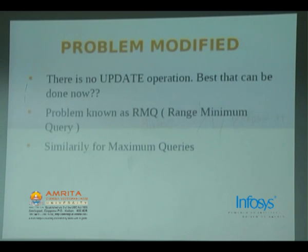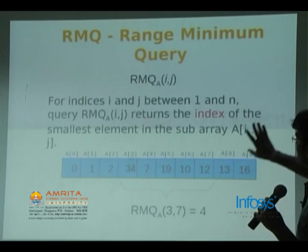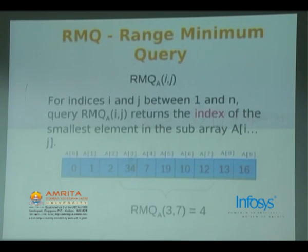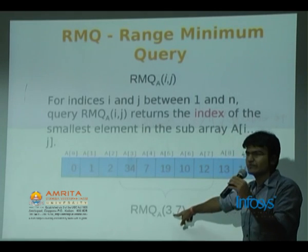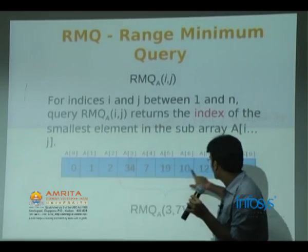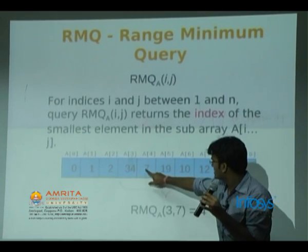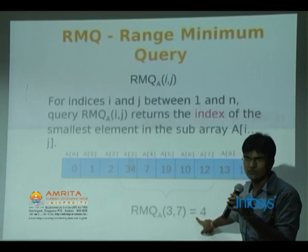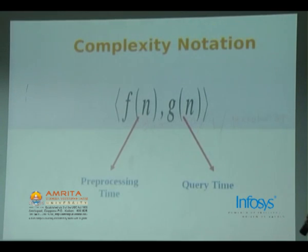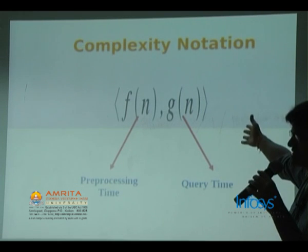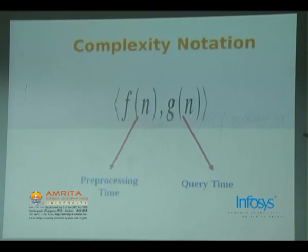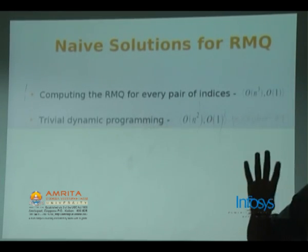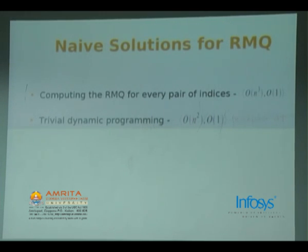If asking for maximum element it's Range Maximum Query. Formally: for indices i and j between 1 and n, RMQ returns the index of the smallest element in the subarray a[i] to a[j]. For example, if I do query RMQ(3, 7) — from index 3 to 7 — and 7 is the least element at index 4, then RMQ(3,7) = 4. We use notation f(n) for preprocessing time and g(n) for query time. Given an array you do some preprocessing; then for every query the time taken is the per-query time.